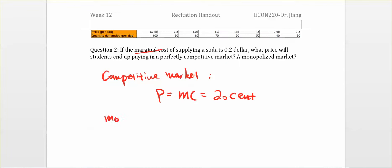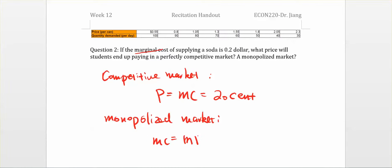How about the monopoly market? In the monopoly market, we cannot simply set the price, but we know the profit maximization rule is marginal cost equal to marginal revenue. We can figure out the price from the table. The table only has price and quantity demanded, so we need to add two more rows: total revenue and marginal revenue.